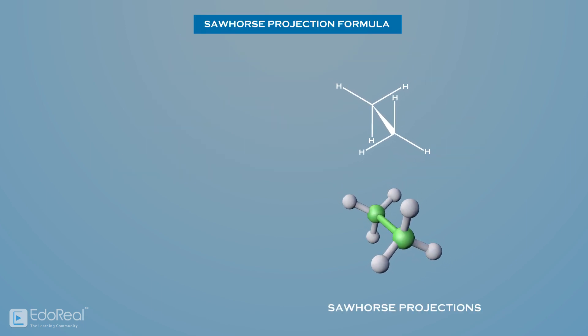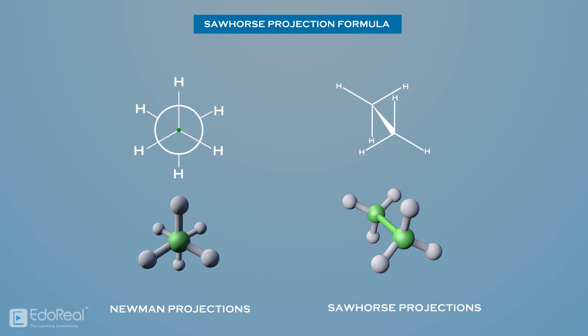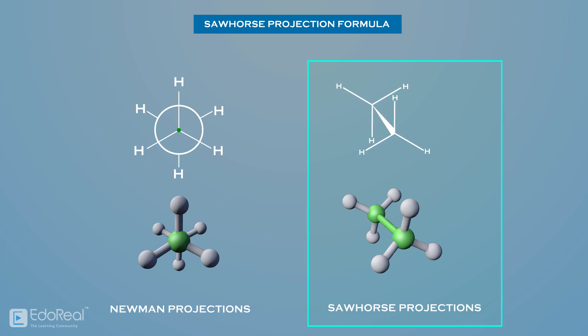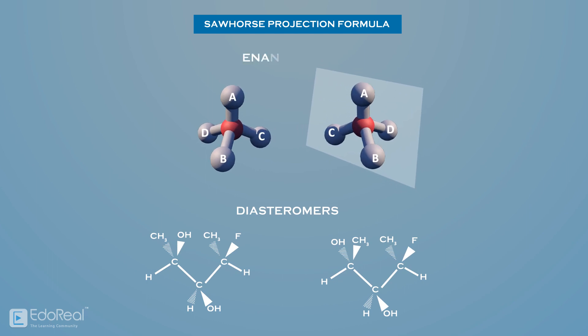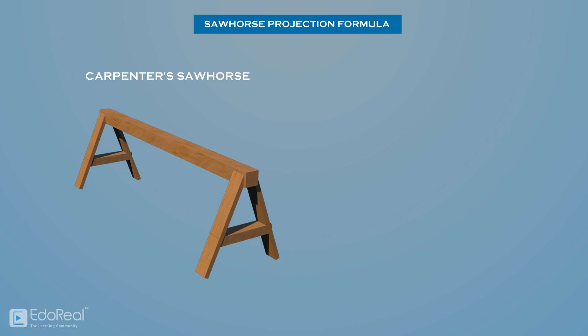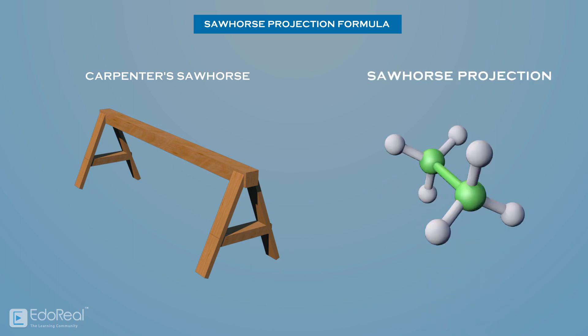Sawhorse projection formula. Sawhorse projections are similar to Newman projections, but the carbon-carbon bond that is hidden in a Newman projection is fully drawn out. The only difference is that a Sawhorse projection has a slightly different perspective. Sawhorse projections are useful for determining if two molecules or structures are mirror images or superimposable. They are called Sawhorse projections because these projections look like a carpenter's sawhorse. In a Sawhorse projection, a molecule is viewed from an angle to the carbon-carbon bond.